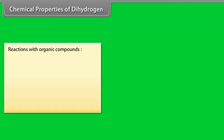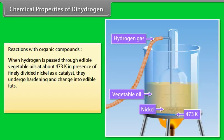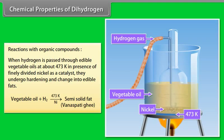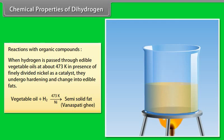Reactions with organic compounds. When hydrogen is passed through edible vegetable oils at about 473 Kelvin in presence of finely divided nickel as a catalyst, they undergo hardening and change into edible fat.